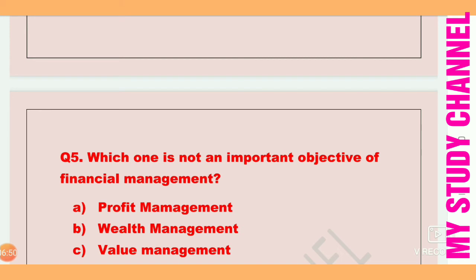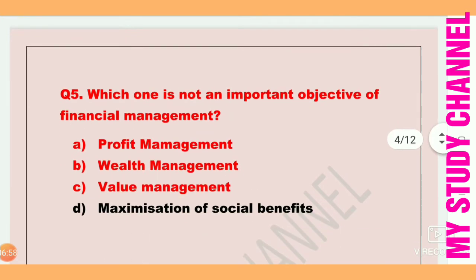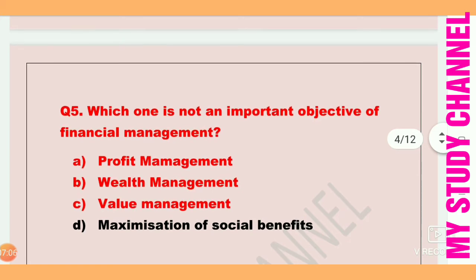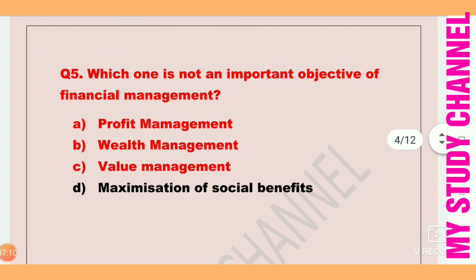Next question: Which one is not an important objective of financial management? Option A is profit management, B is wealth management, C is value management, and D is maximization of social benefits. Option D is the right answer — maximization of social benefits is not an important objective of financial management.